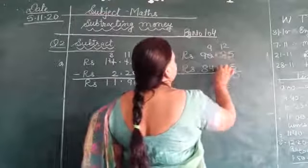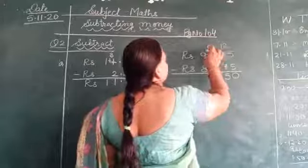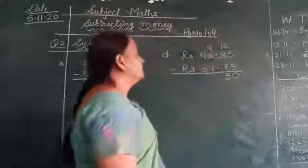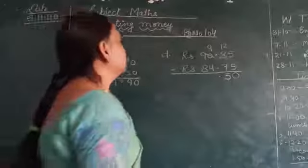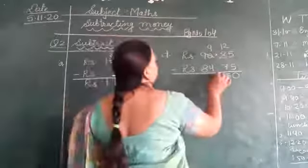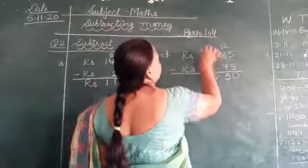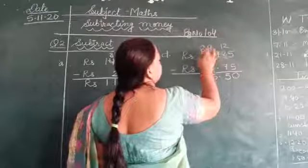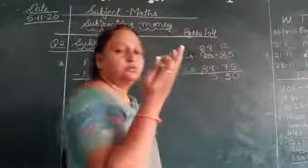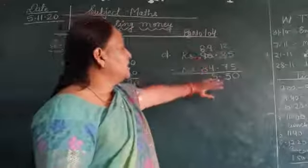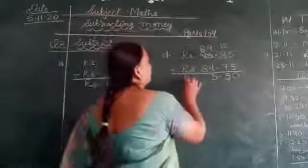Below that we will put the point. 9 minus 4, we will get 5. And we made this 0 into 10, and borrowed from here, so 8 will remain. 8 minus 8 is equal to 0.